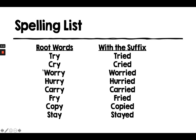So our spellings this week — the root words are try, cry, worry, hurry, carry, fry, copy, and stay. For all of those words, apart from stay, we swap the y for an i and then add ed. However, for stay, because it ends with a vowel before the letter y, we keep the y and just add ed. Hope that makes sense. We'll be practising it in school, but please do practice at home. Remember — swap the y for an i, unless there's a vowel before the y.